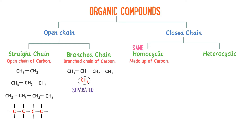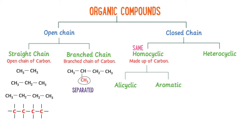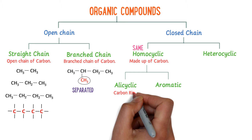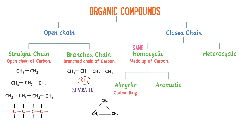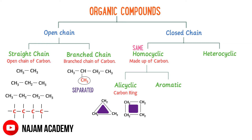Generally, homocyclic organic compounds are called carbocyclic compounds. They are further divided into alicyclic and aromatic. Alicyclic are those organic compounds which contain carbon atoms joined in the form of a ring. For example, cyclopropane and cyclobutane. The structure of cyclopropane is like a triangle and cyclobutane is like a square — all contain a carbon ring.